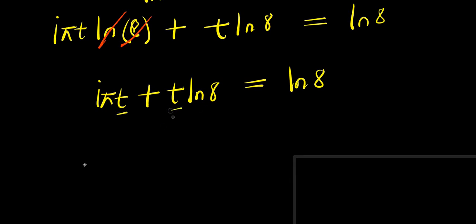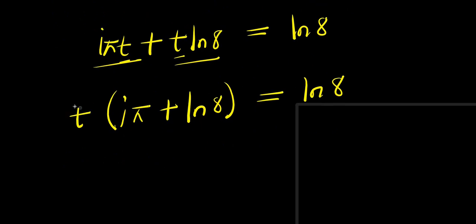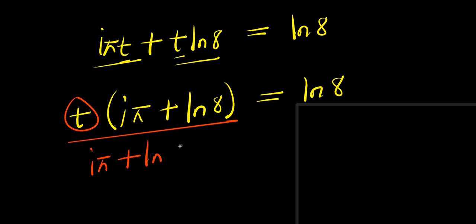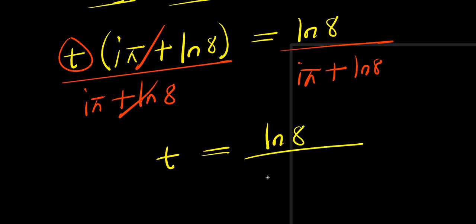There is a t in both terms, so factoring out t: t times (i times pi plus natural log 8) equals natural log 8. I can isolate t by dividing both sides by i times pi plus natural log 8, giving t equals natural log 8 divided by i times pi plus natural log 8.